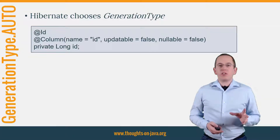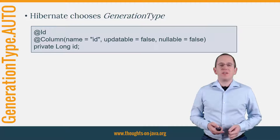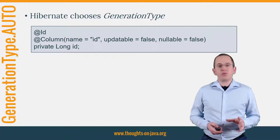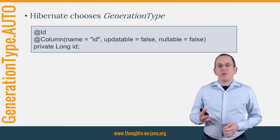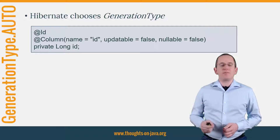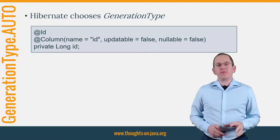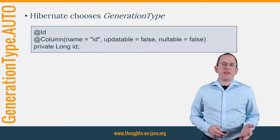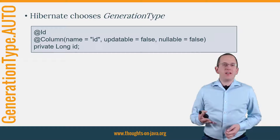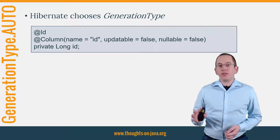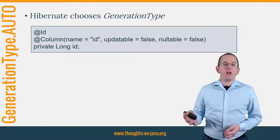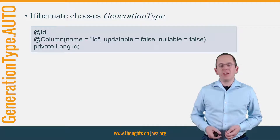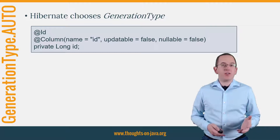The GenerationType AUTO is the default generation type and lets the persistence provider choose the generation strategy. If you use Hibernate as your persistence provider, it selects a generation strategy based on the database-specific dialect. For most popular databases, it selects GenerationType SEQUENCE, which I will explain later. This might seem like a good and easy-to-use option, but you will run into issues when Hibernate decides to change the selected generation type. It did that in version 5 when it started using the table strategy instead of the much better identity strategy for MySQL databases. So better be careful and select the generation type yourself.